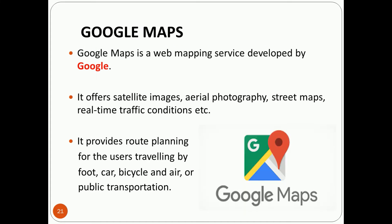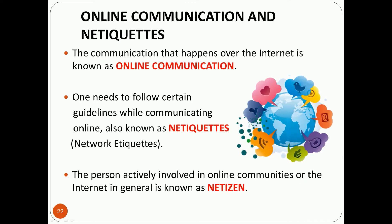Next is Google Maps. Google Maps is a web mapping service developed by Google. It offers satellite images, aerial photography, street maps, and real-time traffic conditions. It also provides route planning for users traveling by foot, car, bicycle, air, or public transportation. The Google Maps icon is shown here — it must be on your mobile phones too.